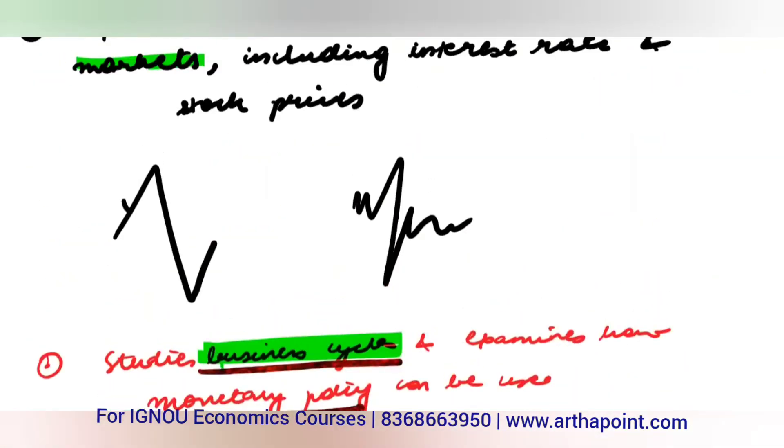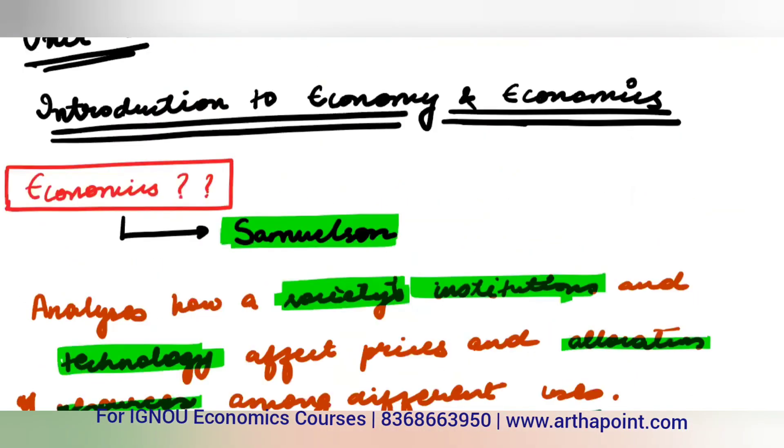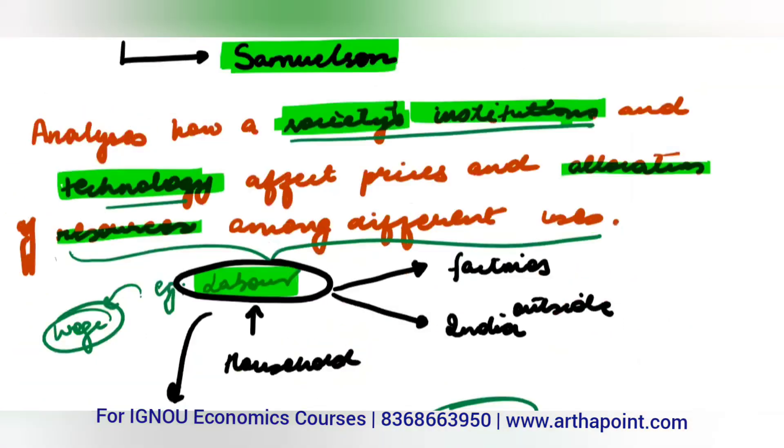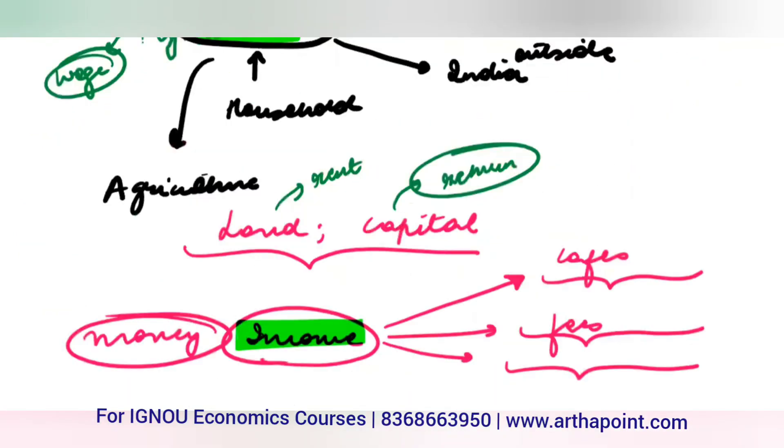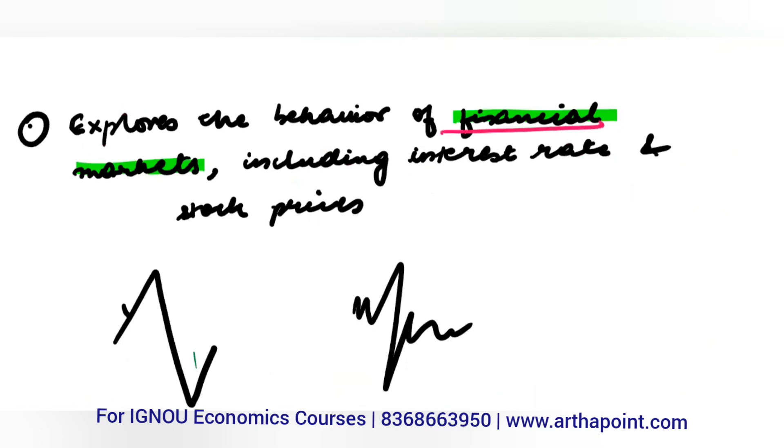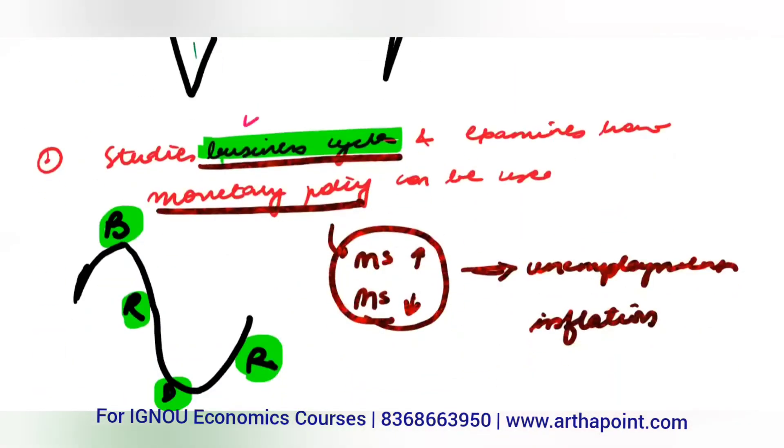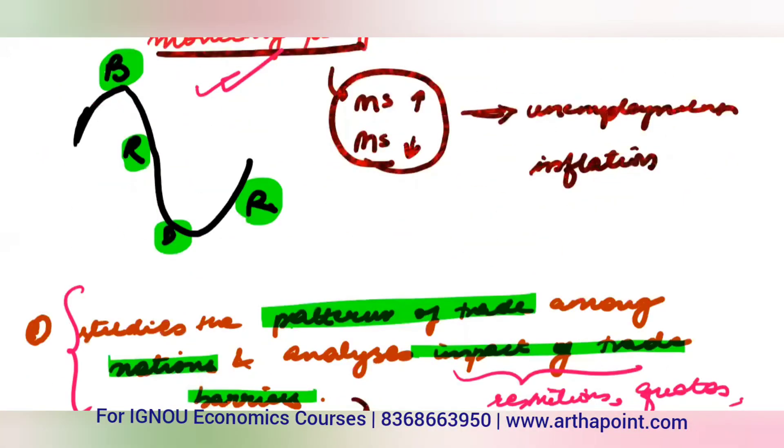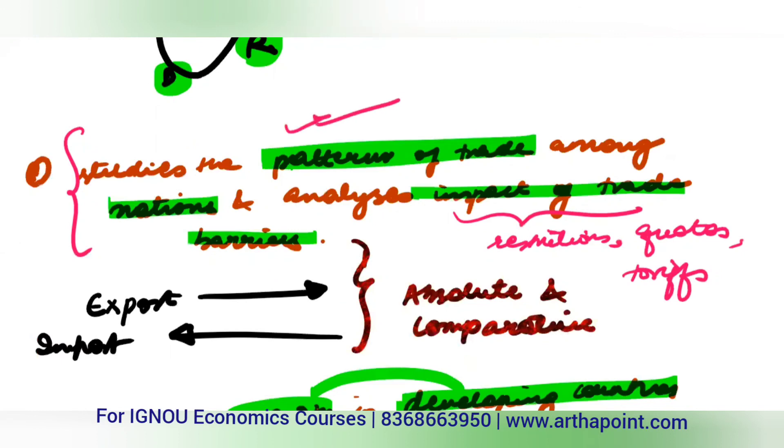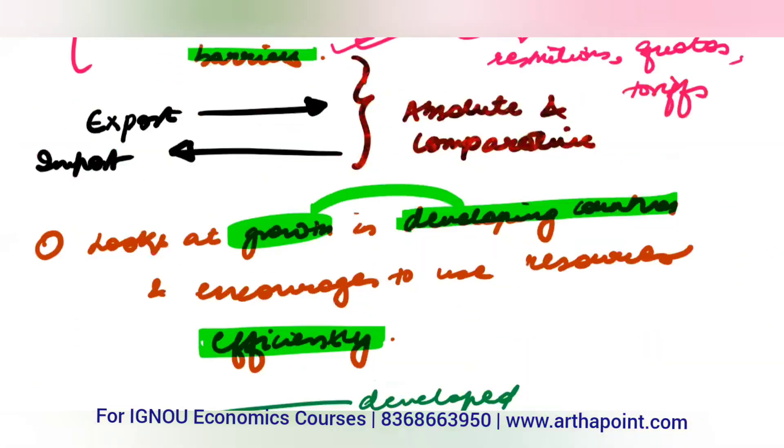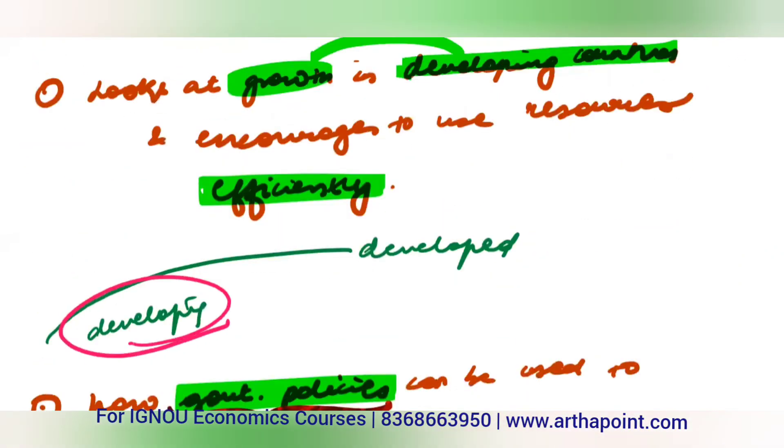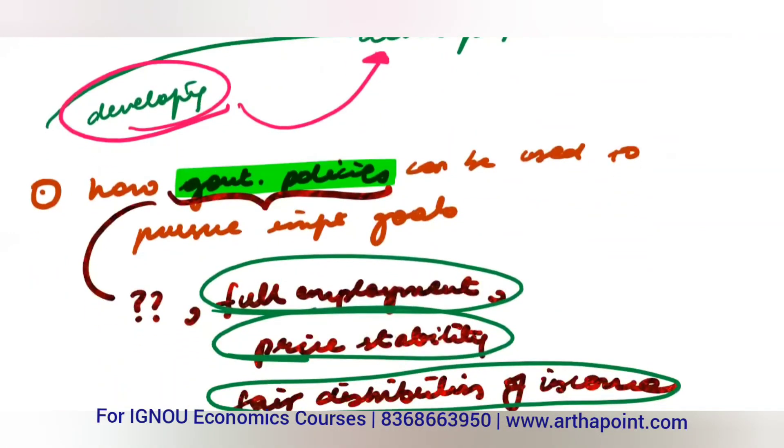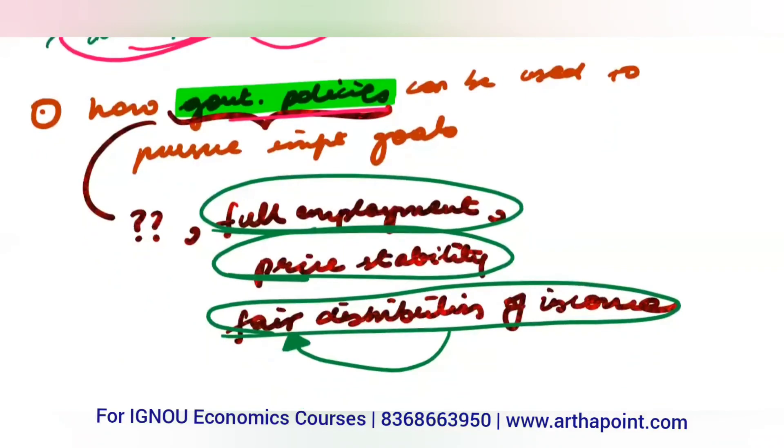So, let's summarize what economics is about: First, it analyzes how society's institutions and technology affect prices and resource allocation. Second, it explores how financial markets and stock prices behave. Third, it examines business cycles and how monetary policy can be useful. Fourth, it tells how trade takes place and the role of trade barriers. Fifth, it looks at developing countries' growth and efficient resource use. Finally, it suggests how government policies can pursue important goals.